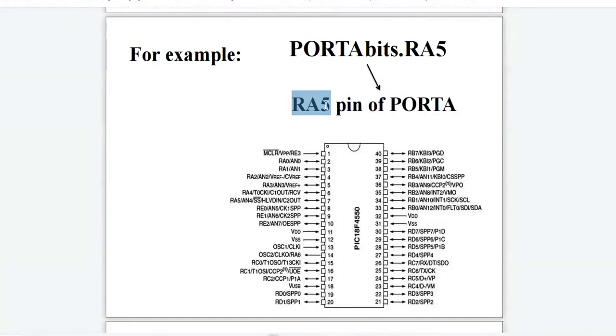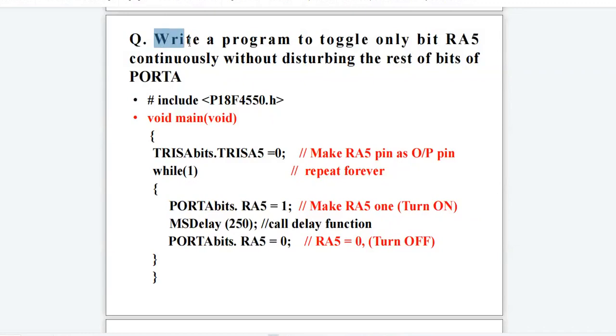Here, RA5 is the name of the pin, while the number of the pin is 7. Write a program to toggle only bit RA5 continuously, without disturbing the rest of the bits of port A.